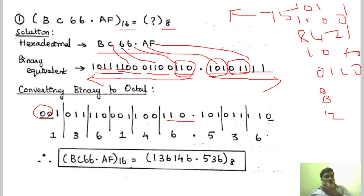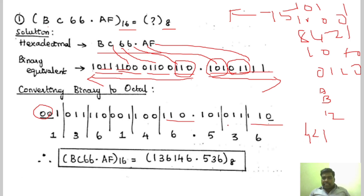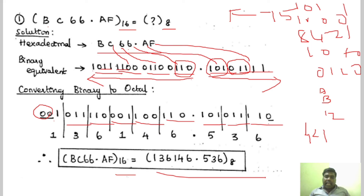Now we have to write the equivalent octal number. For 1, 1, 0 using 421 code that is 6. And this is 3. And this is 5. And this is 6 again. And this is 4. And this is 1. And this is 6. And this is 3. And this is 1. So for this particular hexadecimal number, this is the corresponding octal number.